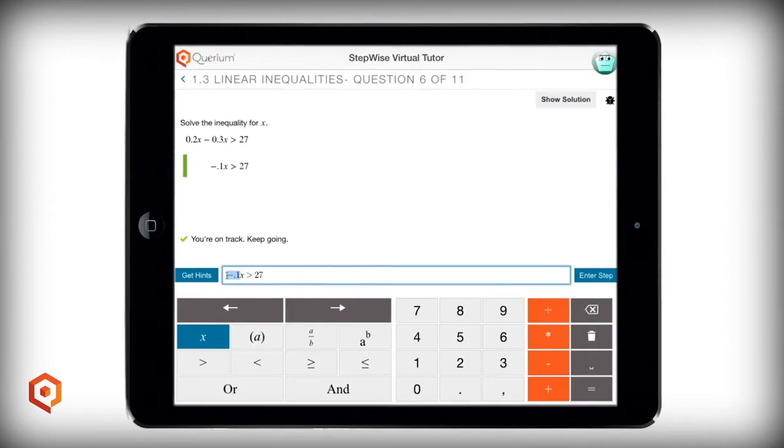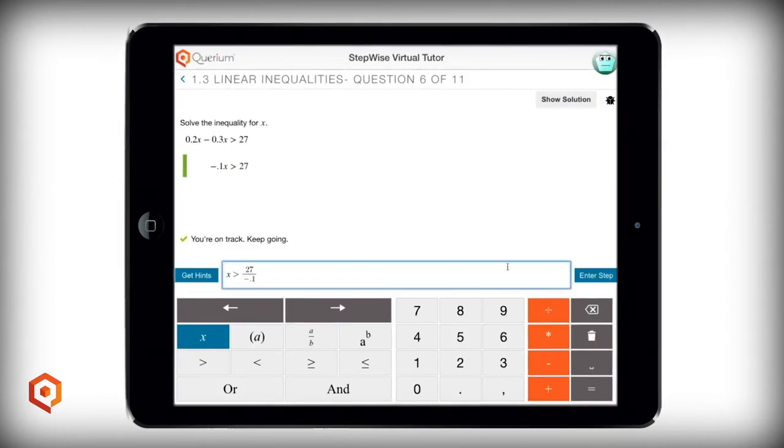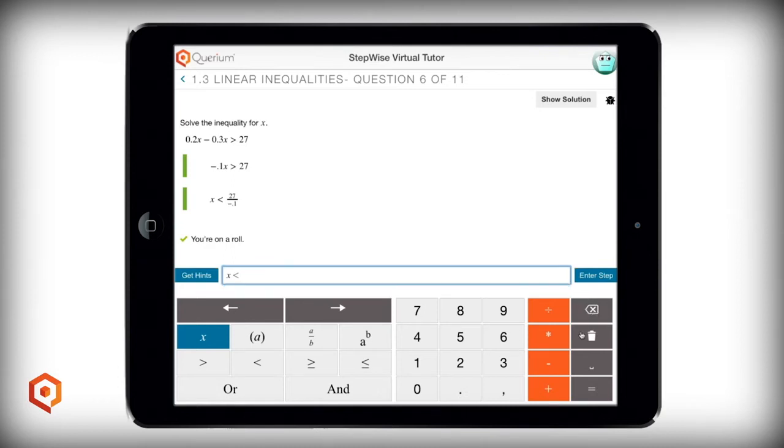One of Stepwise's greatest strengths is the error analysis. We worked with master teachers to identify common errors students make and how best to respond to them. It doesn't matter if the mistake was from something the student should have learned in fourth, fifth, or sixth grade. Stepwise can recognize it, report it to the teacher, and coach the student back on track.